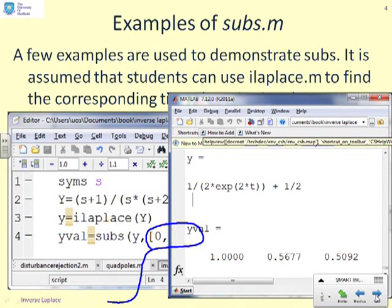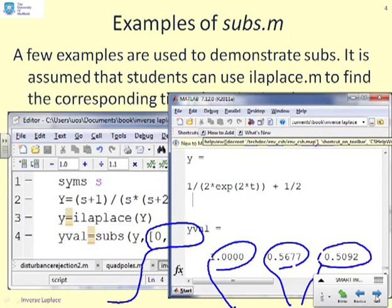And here's the result. You can see y, which is the function of time, is written as 1/2 times e to the minus 2t plus 1/2. And then when I substitute in t equals 0, I get 1. And you'll see that's there. When I substitute in t equals 1, I get that value. And t equals 2, I get that value.